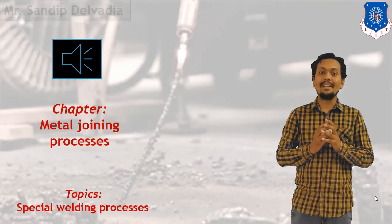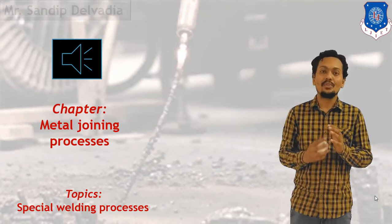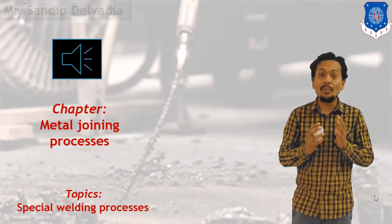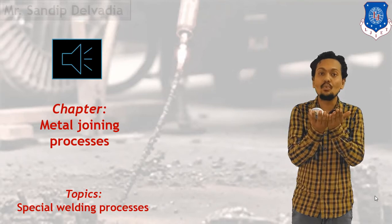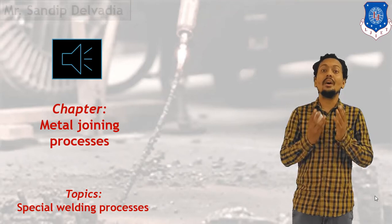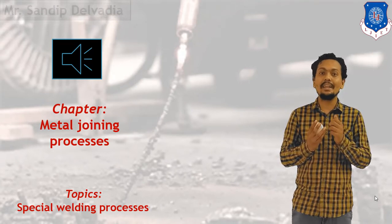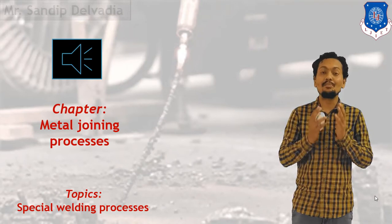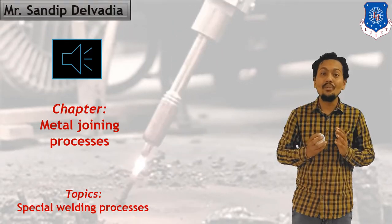Welding is a metal joining process which is used for making a permanent joint. In the metal joining processes, welding is a very important process. In arc welding, an arc is generated and with the help of the heat you can join two plates together — that is the concept of welding. In gas welding, the heat is generated by burning of gases, so oxyacetylene gas welding is a classic example. There are some processes which are considered as special welding processes.